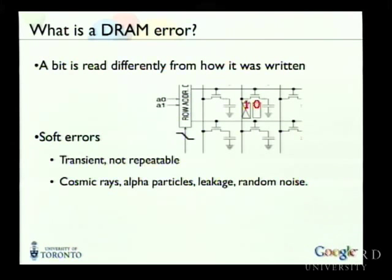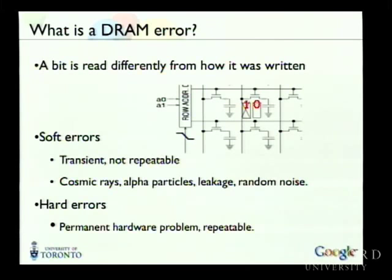There are two different error modes that can lead to DRAM errors. The first are soft errors, which are basically caused by random events — cosmic rays, alpha particles, random noise. They are transient: once you detect the flipped bit and fix it, the problem is gone. The second type are hard errors, which are permanent — the cell is simply stuck at zero. Even if you try to override it, next time you read it, it will still be zero. So soft errors are transient and caused by random events; hard errors are due to permanent hardware problems.